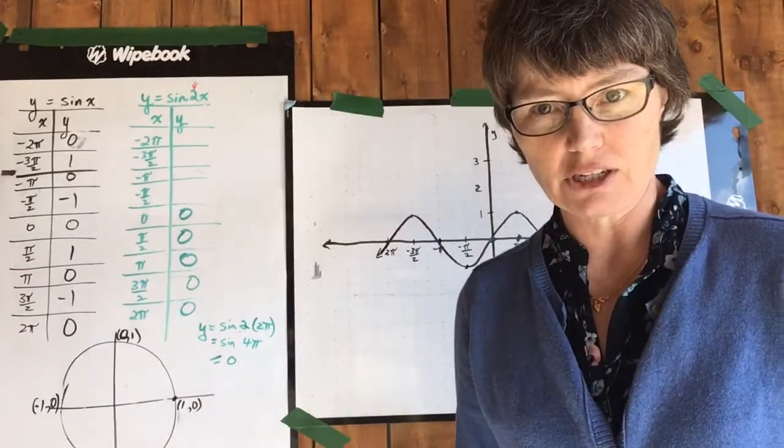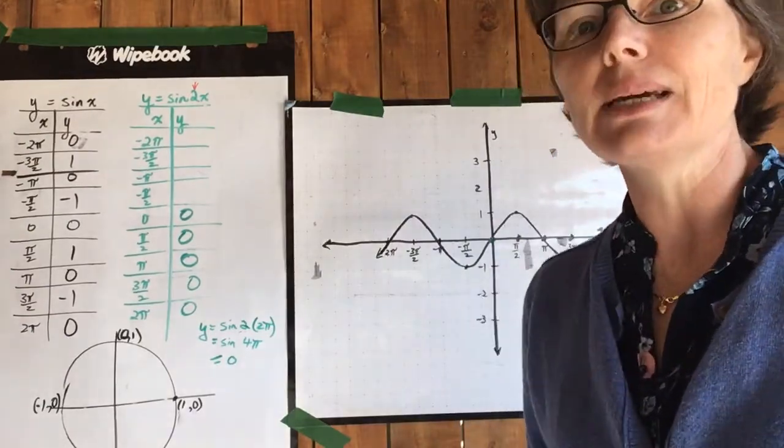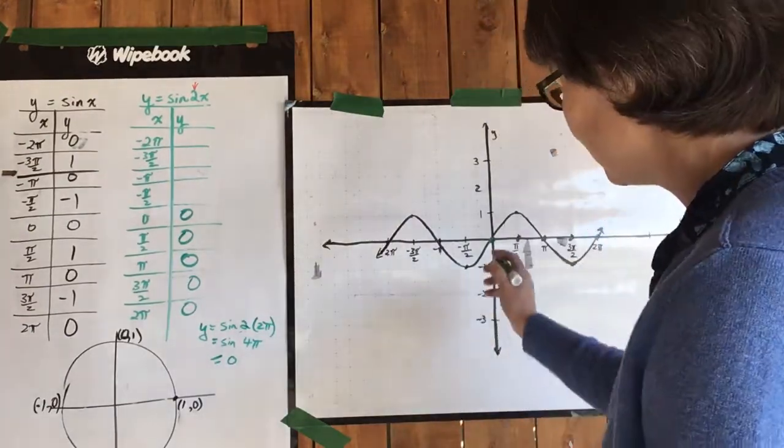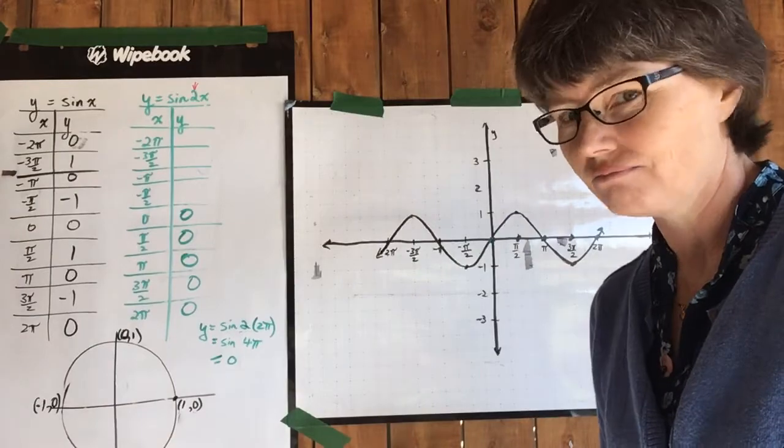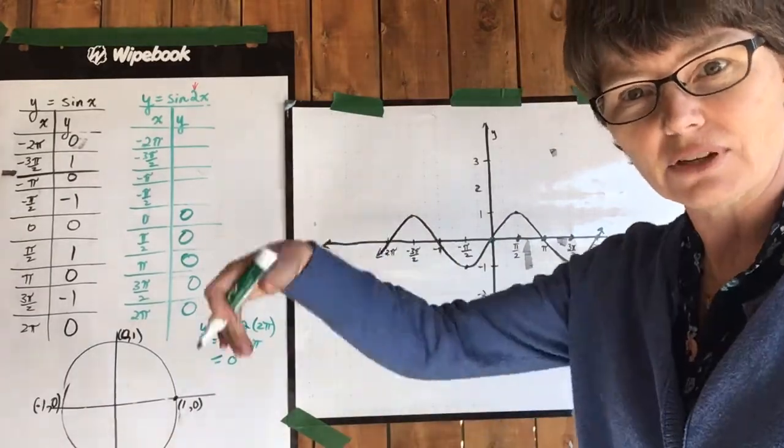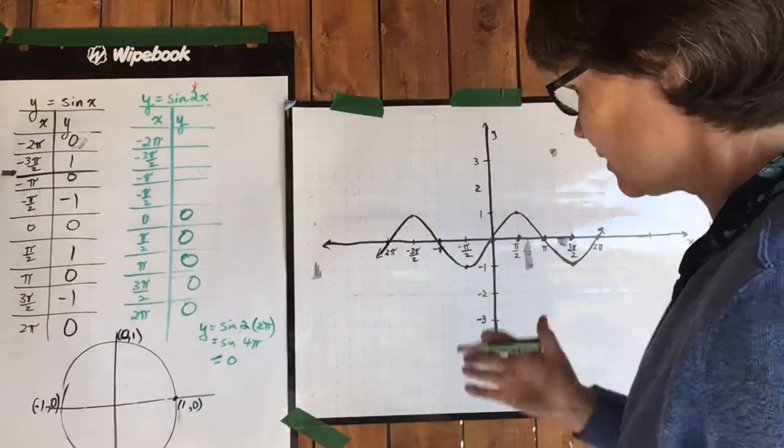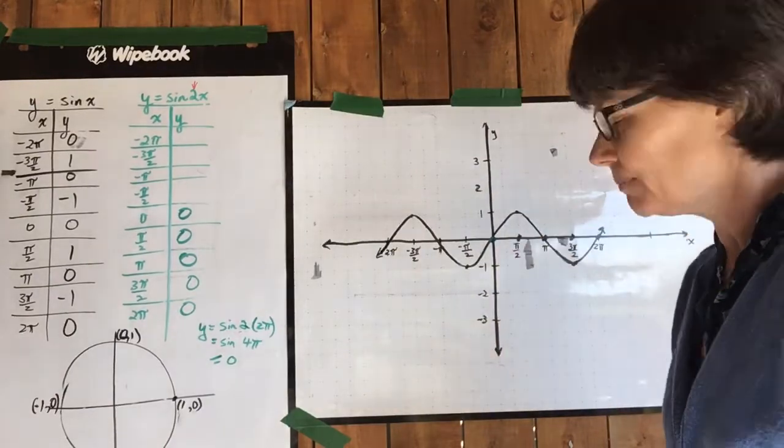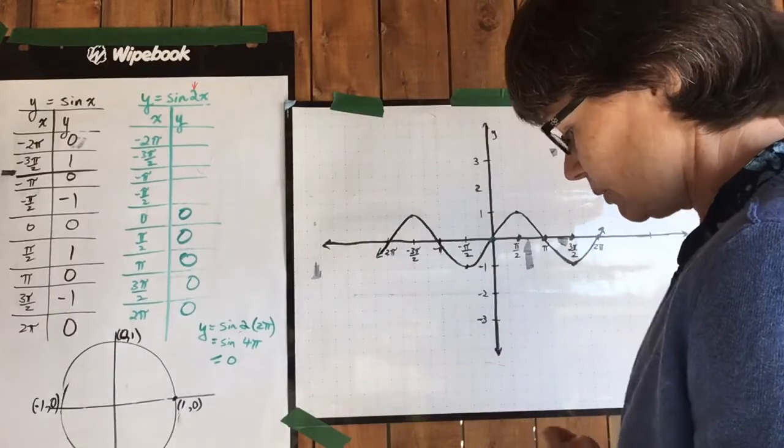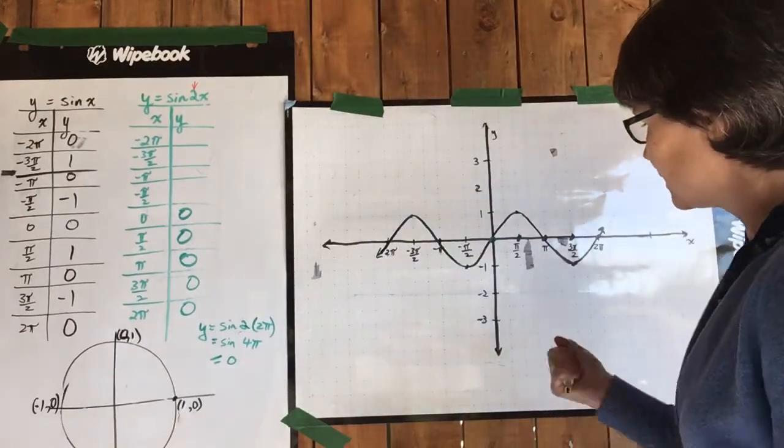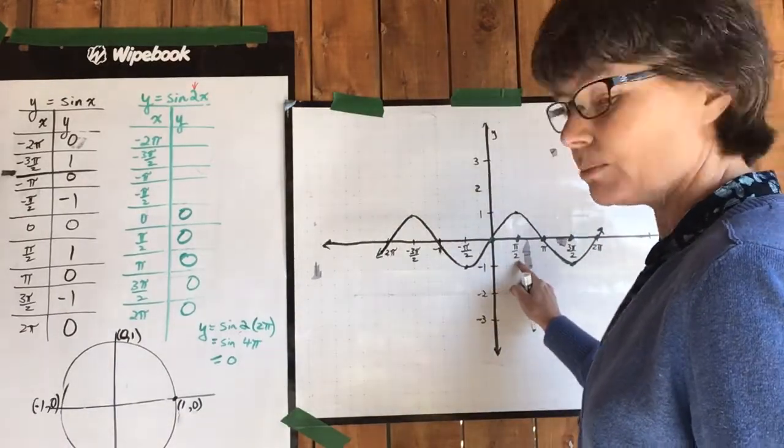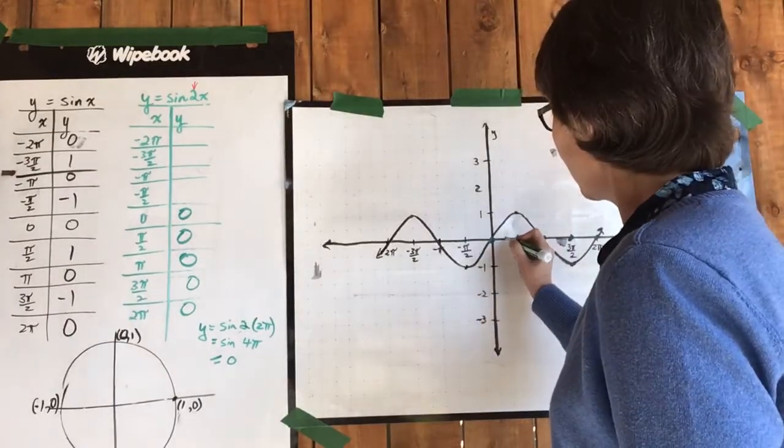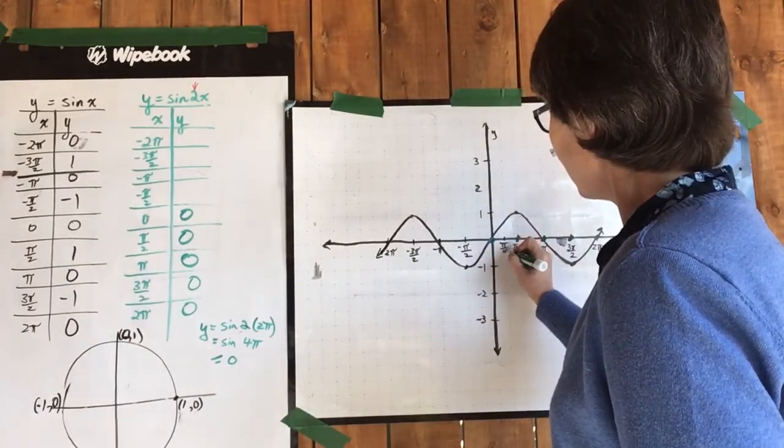So this is a sine function. Let's think about this for a minute. Does it make sense that we're getting a straight line? Obviously not. Sine functions are waves. So we need to figure out what is happening in between each of these places. What's a convenient number we can use? Halfway in between zero and pi over two is pi over four. So let's use pi over four.